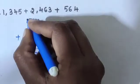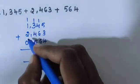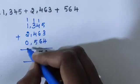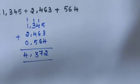5 plus 3 plus 4 equals 12. 12 gives 2 with 1 carry. 1 plus 4 plus 6 equals 11. 11 gives 1 with 1 carry. 1 plus 3 plus 4 plus 5 equals 13. 13 gives 3 with 1 carry. 1 plus 1 equals 2, plus 2 equals 4, plus 0 equals 4. So the answer is 4372.